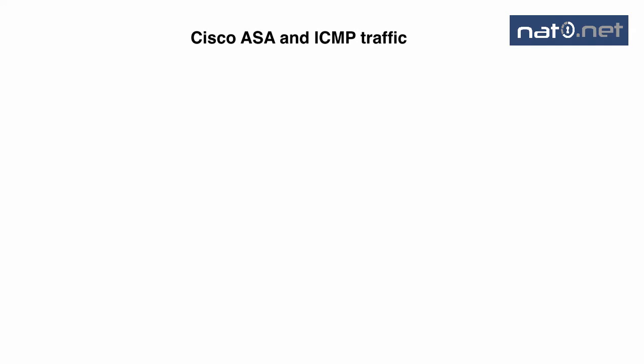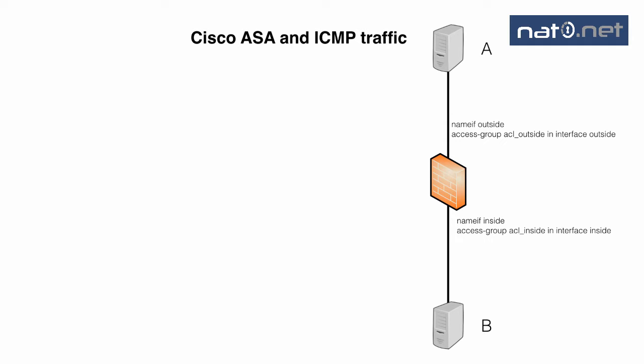Let's talk about the Cisco ASA and ICMP traffic. How the firewall handles ICMP traffic can seem a bit confusing. In this video I will explain how it works. We will use this scenario where we have a firewall with an outside interface and an inside interface and a host on each side.